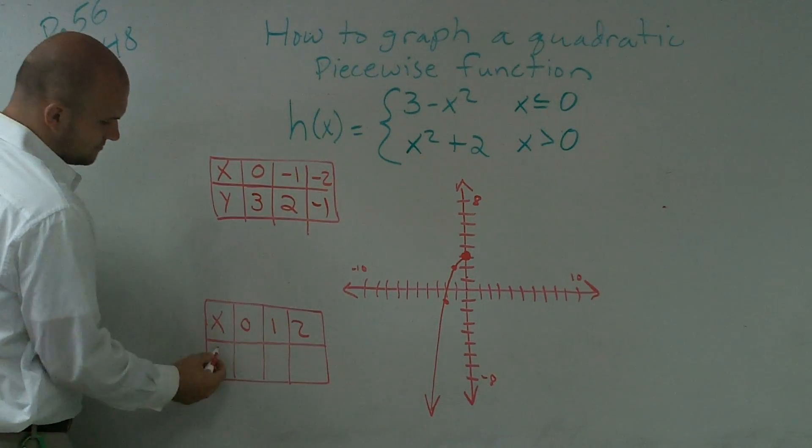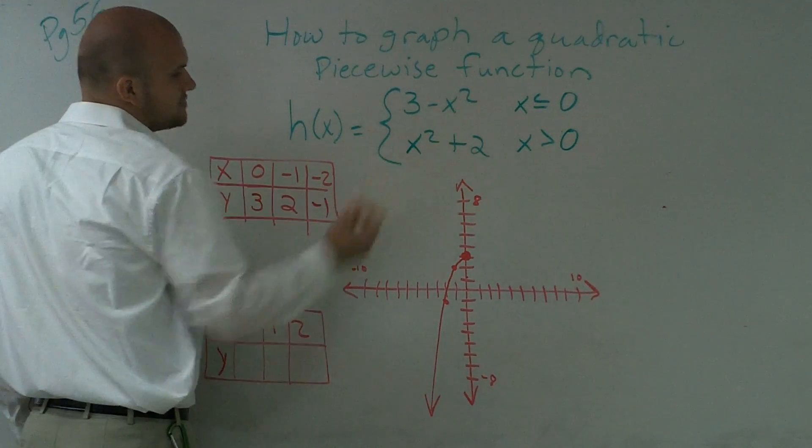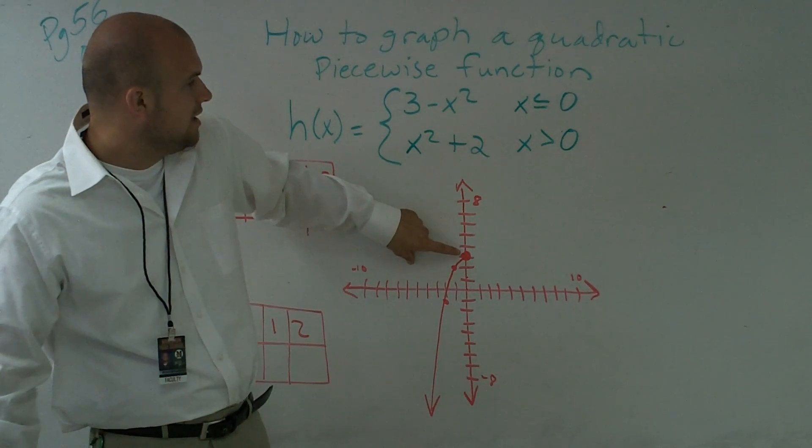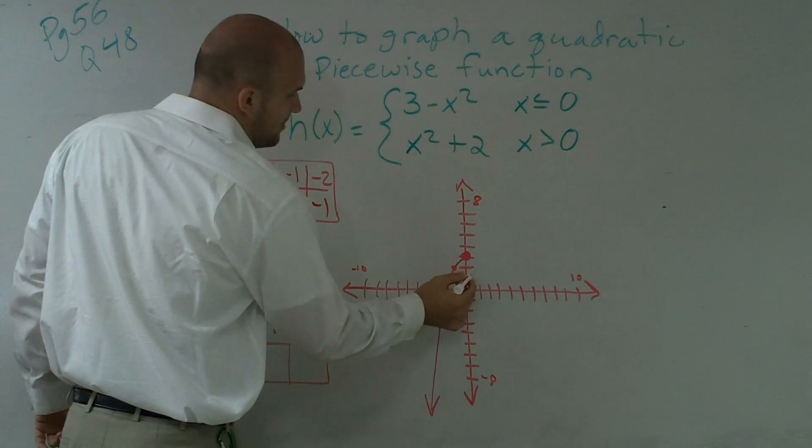So on this one, I have, when x equals 0, I have 2. However, notice that when x is 0, we know that 0 is for this function. So therefore, this is going to be an open dot.